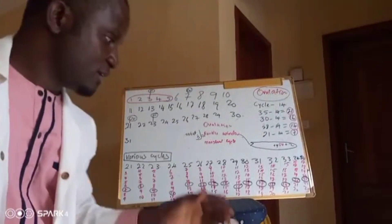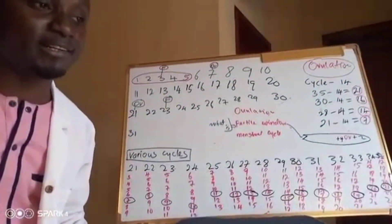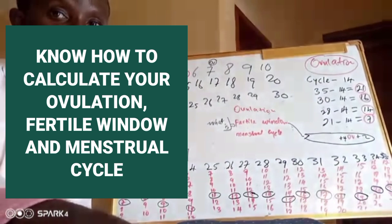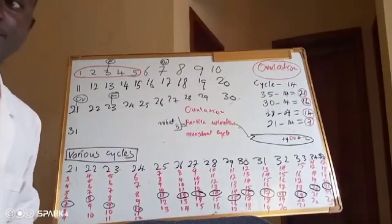What is ovulation? Ovulation is when an egg has been released — that specific day that you have an egg being released into your system. Depending on the length of your cycle, you will ovulate on a specific day. Everybody doesn't ovulate on the same day. We are now going to move to the board and explain how to calculate your cycle, your ovulation, and your fertile window.